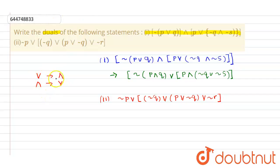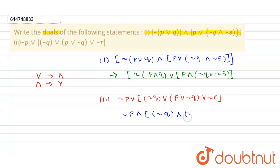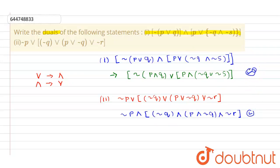To find the dual, simply substitute: in place of 'or' substitute 'and', and in place of 'and' substitute 'or'. So the dual becomes: negation of p, AND in bracket negation of q, AND in bracket p AND negation of q, AND negation of r. This is the dual of statement two, and these two duals are our final answer.